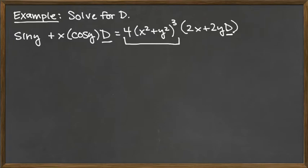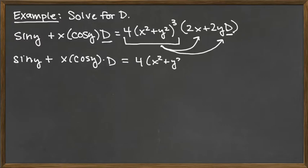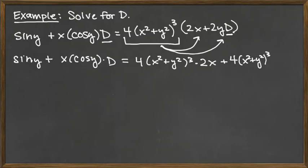We've got to first take a look at this right-hand side and figure out how we can unbury this d that's buried inside the parentheses. That whole block of stuff — the 4 times the parentheses x squared plus y squared all raised to the third — needs to be distributed across the plus sign within the parentheses just so that we can get rid of that set of parentheses and unbury the d.